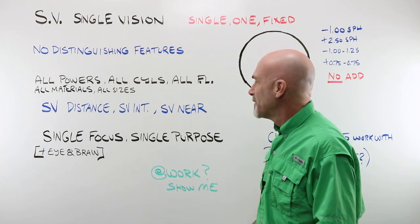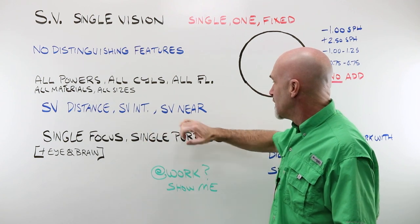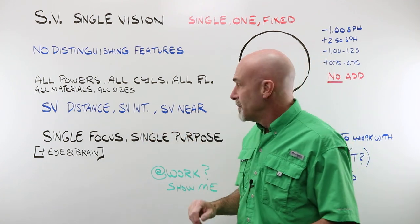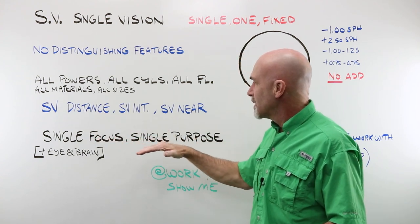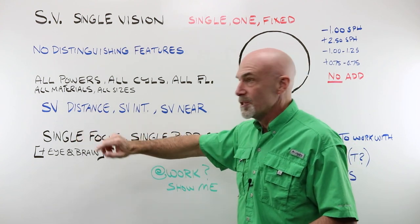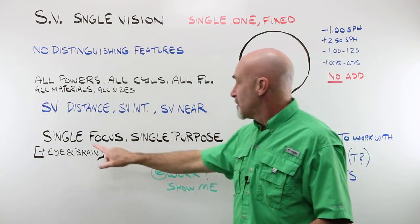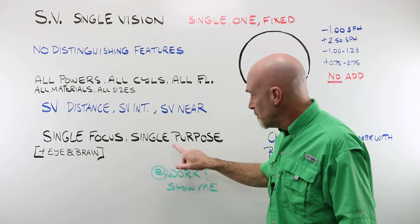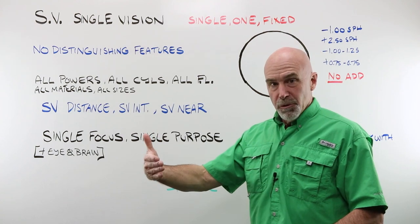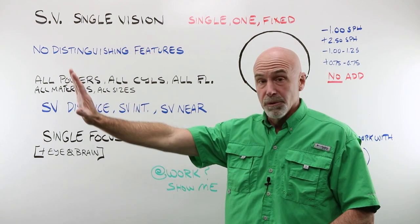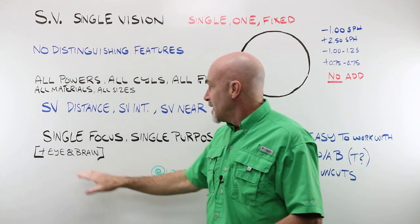Kind of important. You have single vision distance, single vision intermediate, and single vision near. This is something that people tend to get a little bit stuck on, particularly when you're new. People always think of single vision as being distance only for some reason. But of course, they're available in anything because they are a single focus, single purpose lens. Computer only, distance only, near only, sewing, those kinds of things.